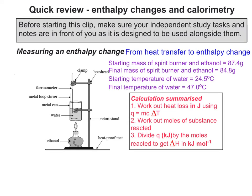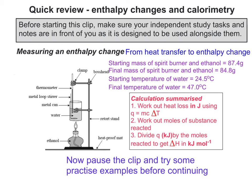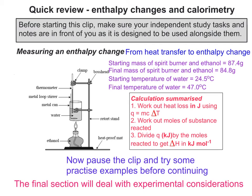The calculation can be summarised in three simple steps. Step one: work out the heat loss in joules using q = mcΔT. Step two: work out the moles of substance that reacted — in this case, the moles of ethanol burned. Step three: divide Q, converting it to kilojoules, by the moles reacted to get ΔH in kJ mol⁻¹. It's a good idea to pause the clip now and try some practice examples before we continue to the last part.